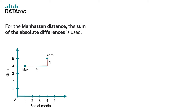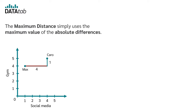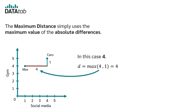For the Manhattan distance, the sum of the absolute differences is used. So we simply calculate 4 plus 1 and get a distance of 5. The maximum distance simply uses the maximum value of the absolute differences — in this case, 4.